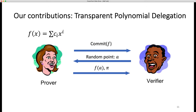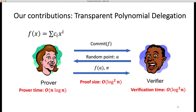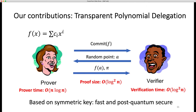In our work, we focus on the polynomial delegation part of ZGK17. We build a new transparent zero-knowledge polynomial delegation scheme — transparent means no trusted setup. The proof time in our scheme is O(n log n), where both the verification time and the proof size are O(log² n). Our protocol is only based on symmetric key cryptography, which is very fast and post-quantum secure.